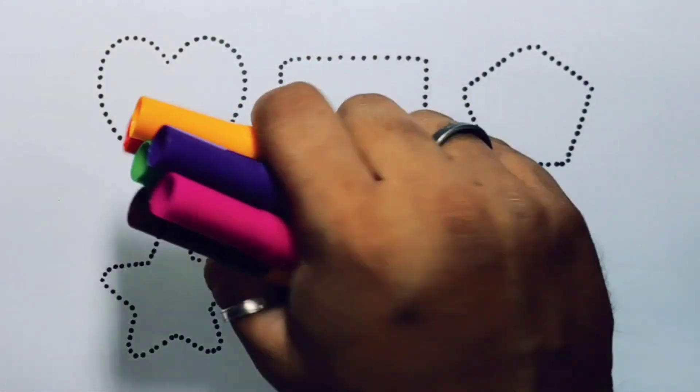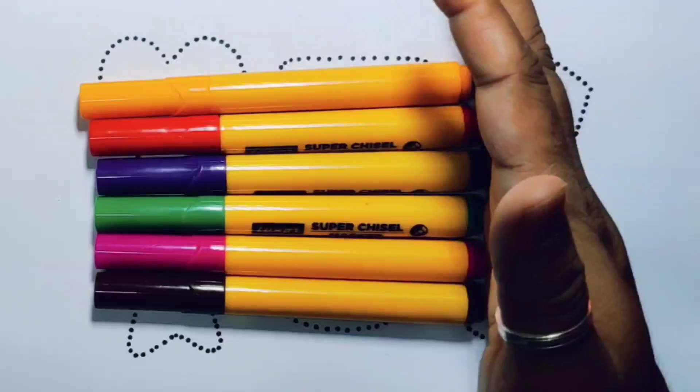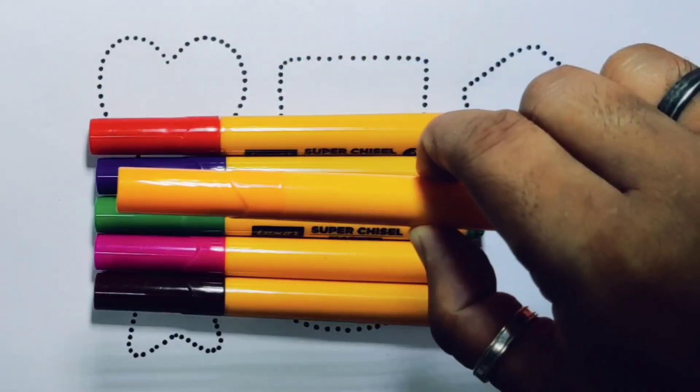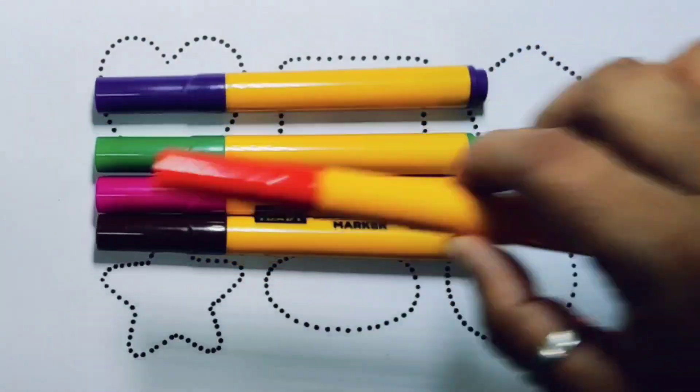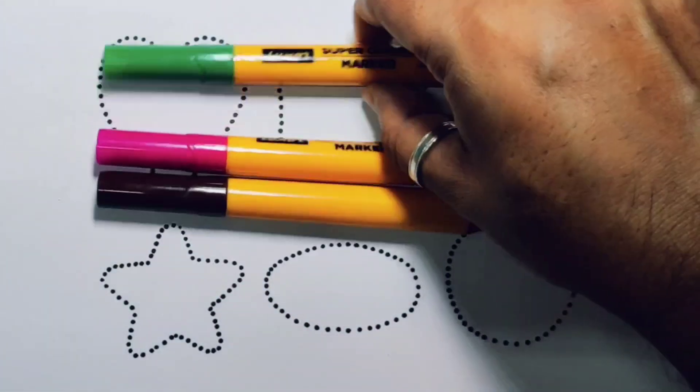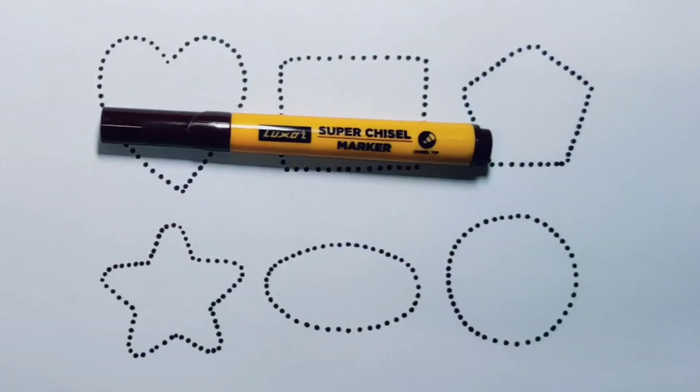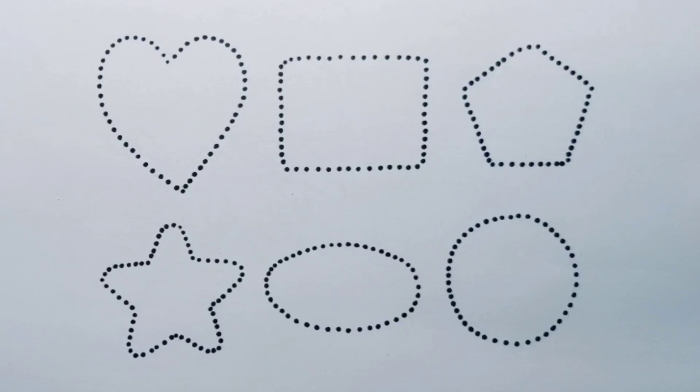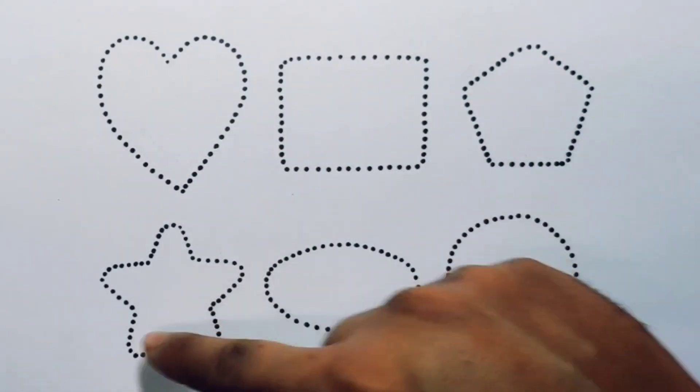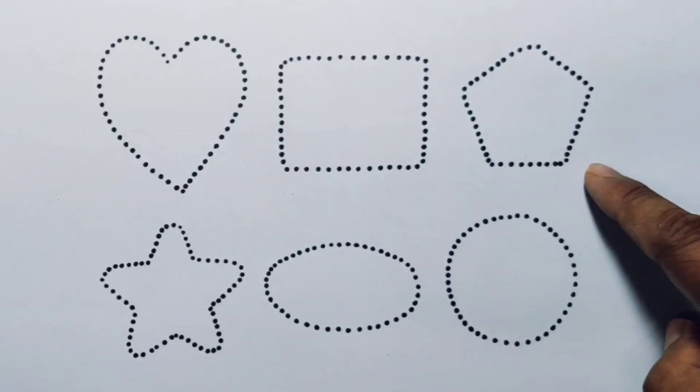Hello kids, welcome to my new video. First we're going to know the colors name: orange color, red color, purple color, green color, pink color, chocolate color, and black color. Now let's learn the 2D shapes: heart, rectangle, pentagon, star, oval, and circle.